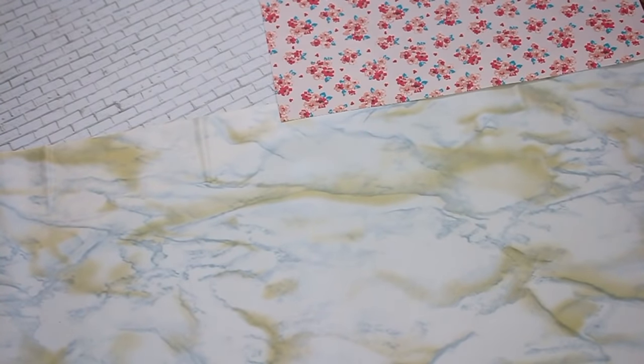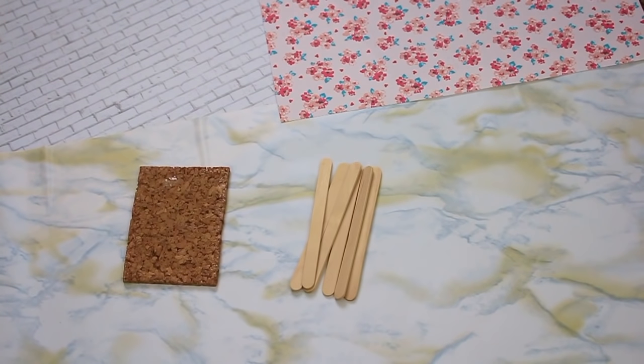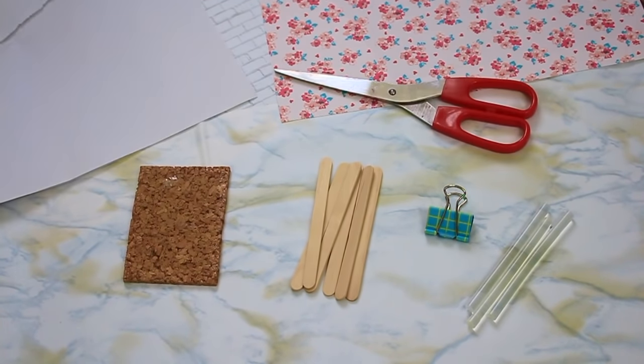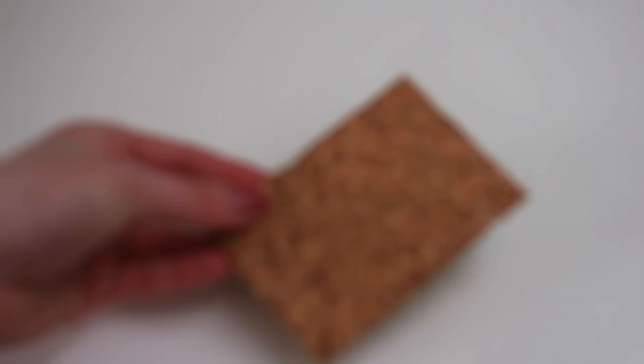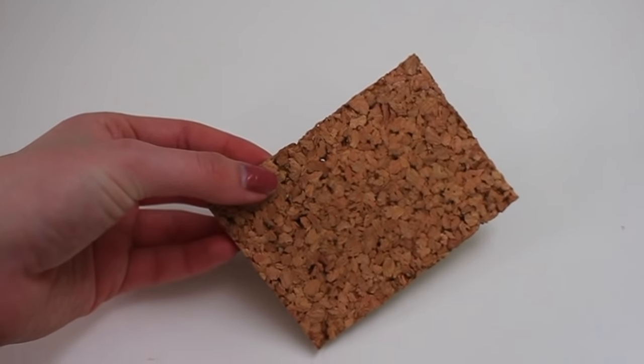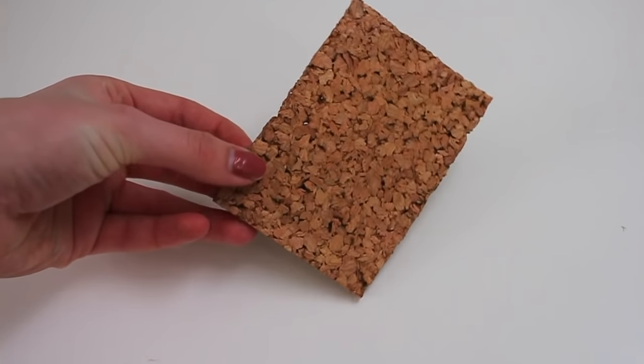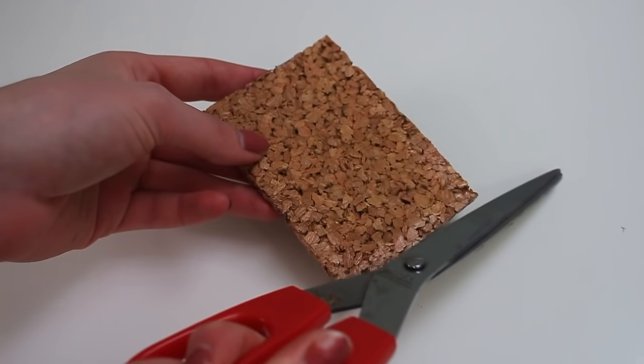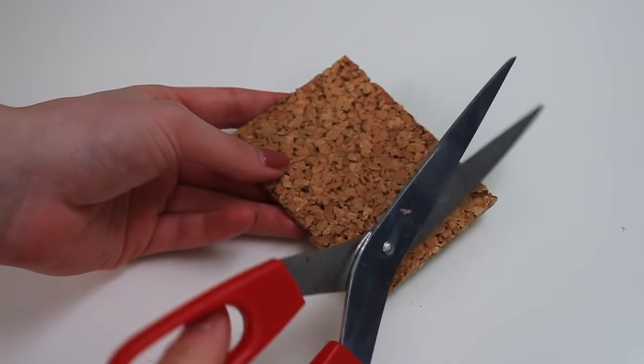For this, you're going to need some cork. You can also use cardboard if you want, popsicle sticks, a binder clip, glue, scissors, and paper. So begin by taking your cork. You can also use cardboard, but I'm just using cork board because it gives it a really nice texture and I just cut that into a rectangle shape.